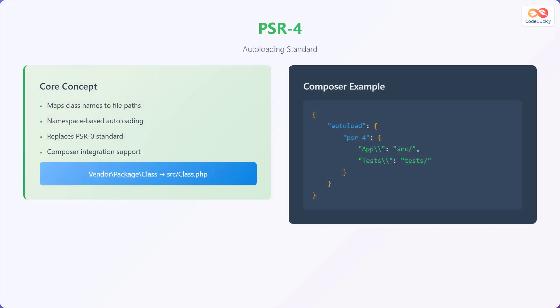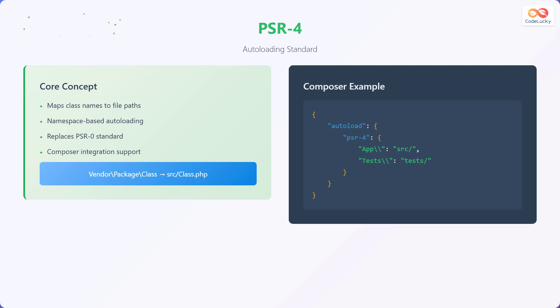Let's explore PSR4, the autoloading standard. Its core concept revolves around mapping class names to file paths, enabling namespace-based autoloading. It supersedes the older PSR0 standard and seamlessly integrates with Composer. For instance, a class named Vendor\Package\Class located in the src directory would correspond to the file path src/Class.php. Here's an example of how to configure PSR4 autoloading in Composer's configuration file.